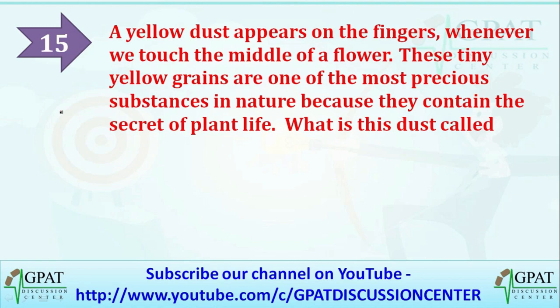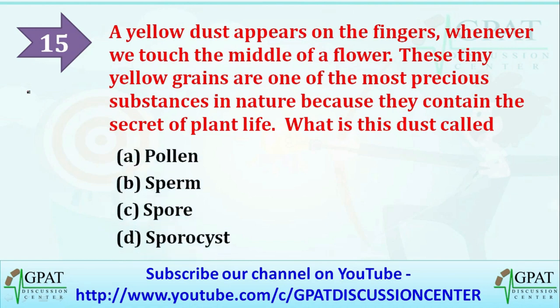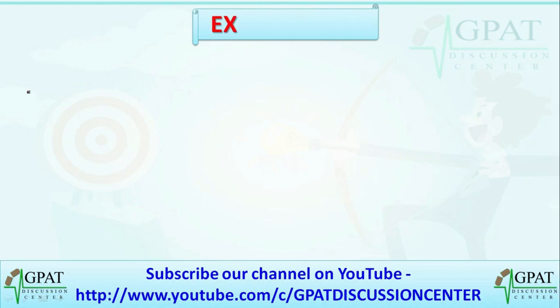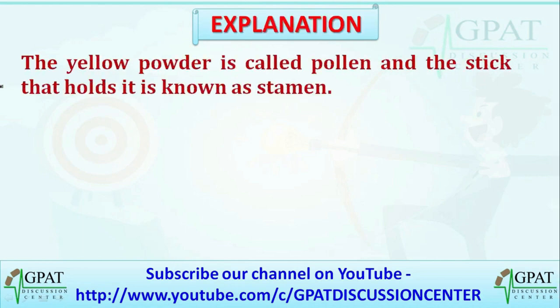The last question: a yellow dust appears on the fingers whenever we touch the middle of a flower. These tiny yellow grains are one of the most precious substances in nature because they contain the secret of plant life. What is this dust called? Options are pollen, sperm, spore, or sporocyst. The correct answer is pollen. The yellow powder is called pollen and the stalk that holds it is known as the stamen.